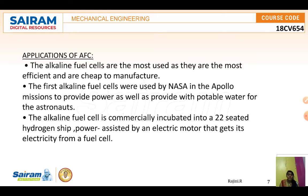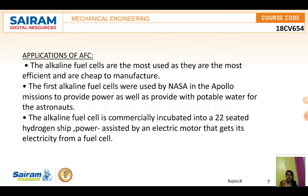Alkaline fuel cells were first used by NASA in the Apollo missions to provide power as well as portable water for the astronauts. They are most efficient, have a lower initial cost, and are cheap to manufacture. Alkaline fuel cells have also been commercially incorporated into a 22-seat hydrogen ship powered by an electric motor that gets its electricity from the fuel cell.